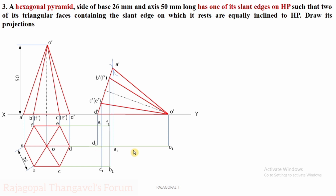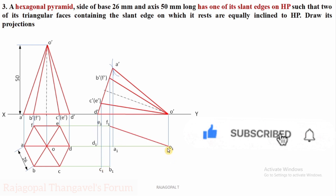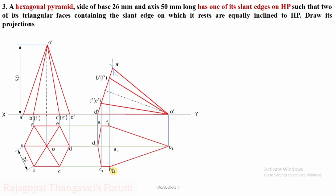After marking all the notations in the top view, always join the outer surfaces first. Connect O1 to F1, F1 to E1, E1 to D1, D1 to C1, C1 to B1, then B1 to O1. If you look from the top, you can clearly see the entire hexagon base — all six corners are visible — so complete the entire hexagon with all six corners as visible lines.